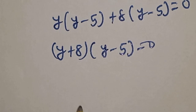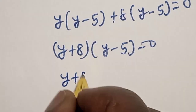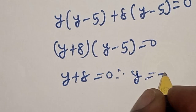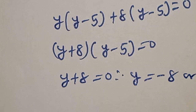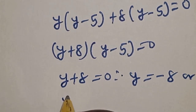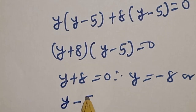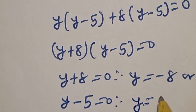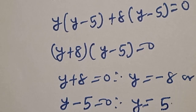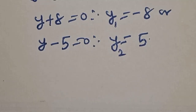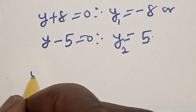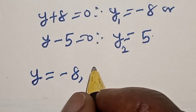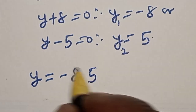There are two cases here. Case one: y plus 8 is equal to 0, therefore y is equal to minus 8. Case two: y minus 5 is equal to 0, therefore y is equal to 5. Therefore, our final answer is y is equal to minus 8 or 5.